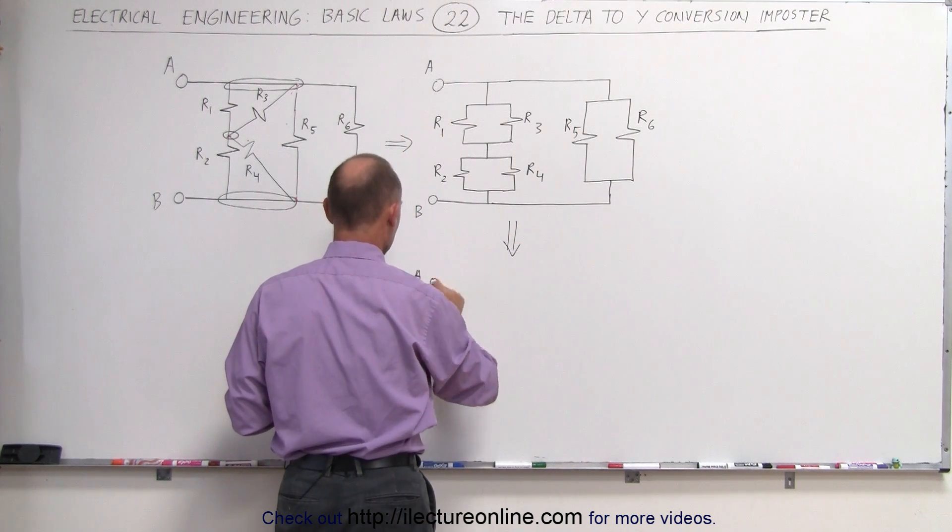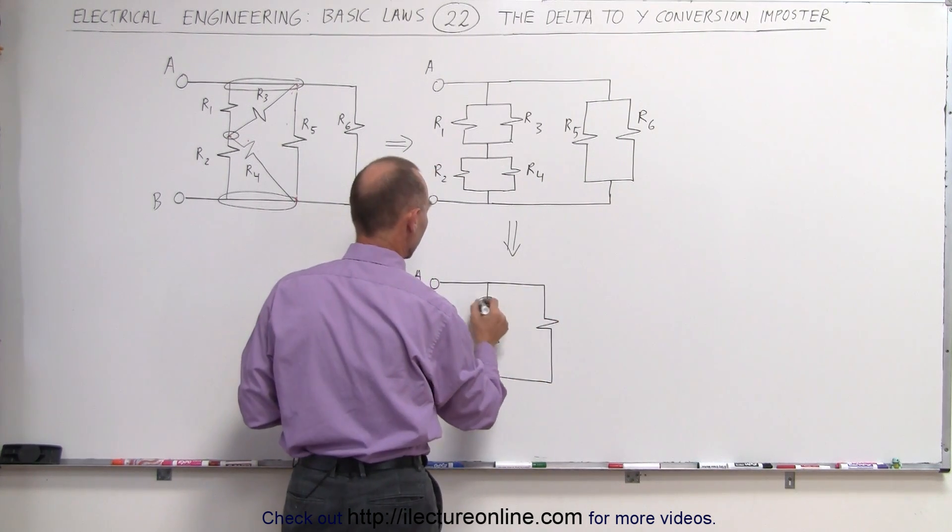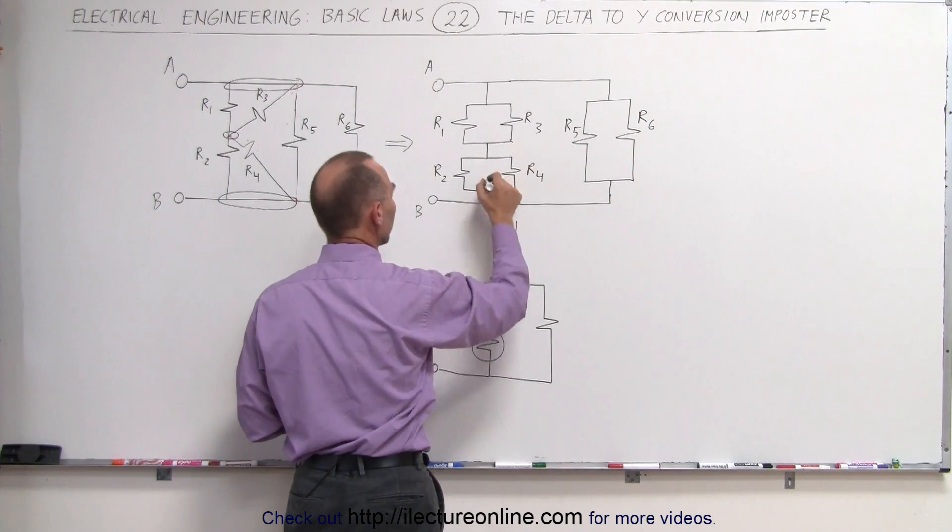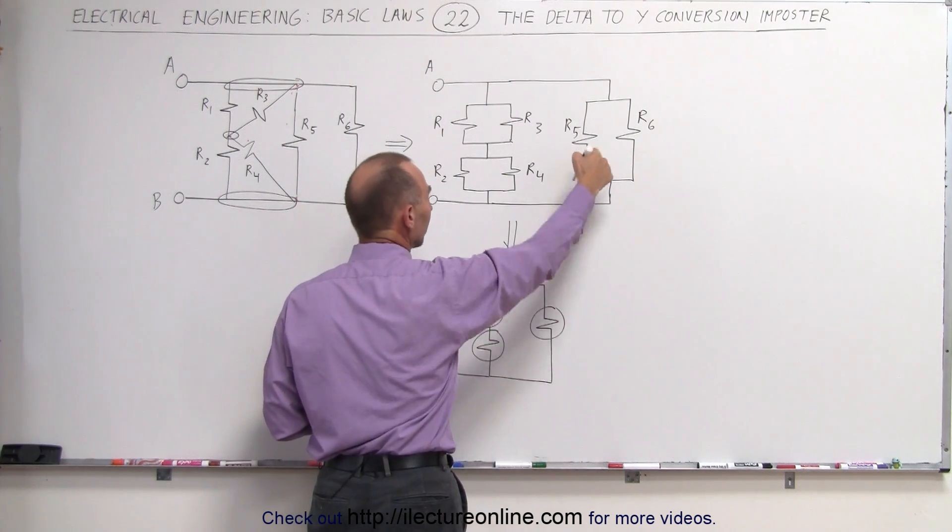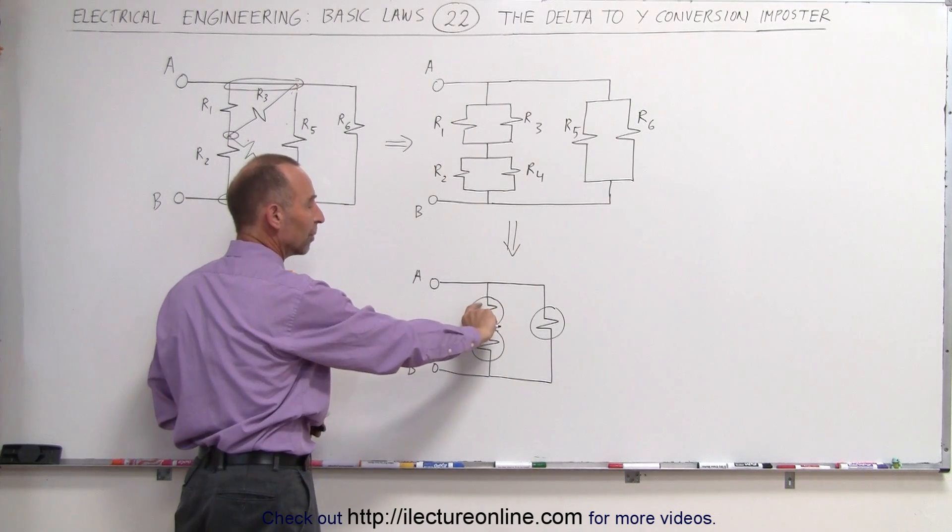This would be A, this would be B. That this resistor is the equivalent of those two, this resistor is the equivalent of those two, and this resistor is the equivalent of those two. And then you just continue on. You know that these are now in series, you simply add those together.